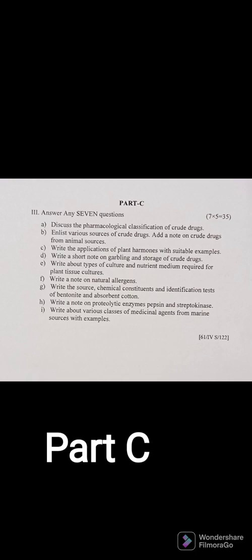Part C Question 2: List the various sources of crude drugs and add a note on crude drugs from animal sources. Various sources include plant sources, mineral sources, microorganism sources, and marine sources. For animal sources specifically, examples include castor oil, cod liver oil, fish oil, enzymes like chymotrypsin and trypsin, and gelatin — which we recently discussed. Write these in an effective manner.